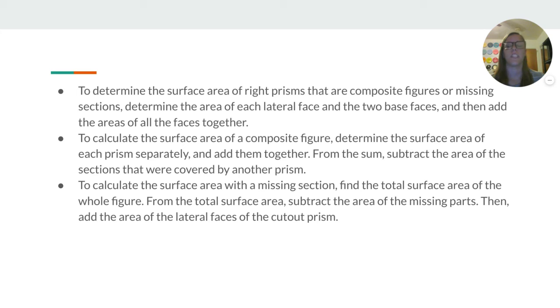And to calculate the surface area with a missing section, find the total surface area of the whole figure. From the total surface area, subtract the area of the missing parts, then add the area of the lateral faces of the cutout prism.